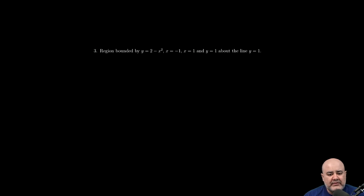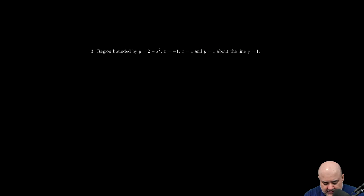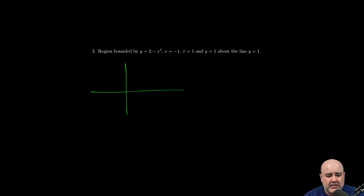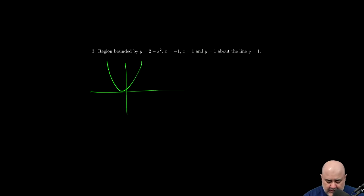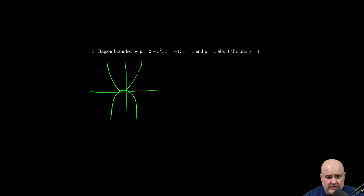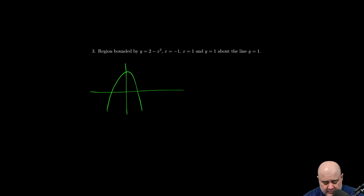So in this problem we have a region bounded by y equals 2 minus x squared. Let's actually graph this as we're doing it. So quick sketch: 2 minus x squared — that's x squared, negative x squared flips it upside down, and the plus 2 moves it up by 2 units. So it's an upside-down parabola shifted up by 2 units.